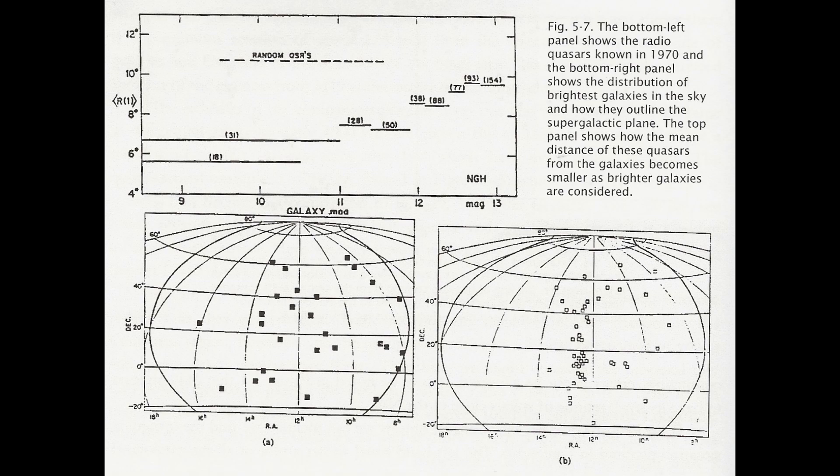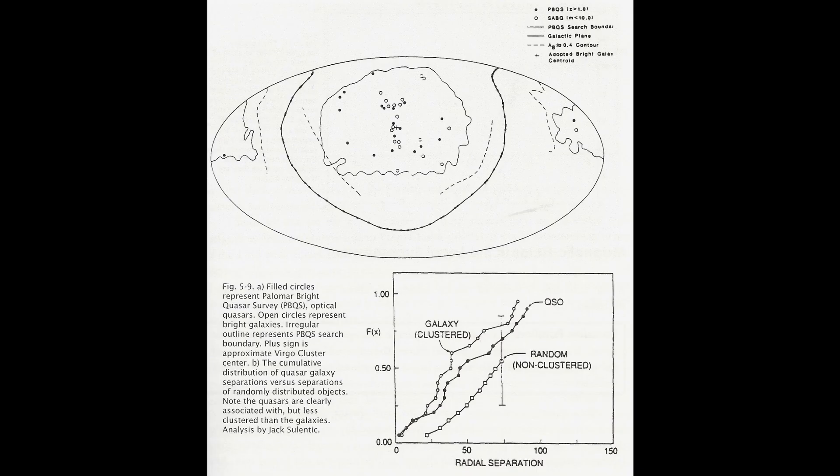When the Palomar Bright Quasar Survey surveyed the northern sky and you examined the locations of the quasars, then you would originally expect the quasars to be distributed randomly across the entire sky. That is not what you find. Instead they are all concentrated within the Virgo cluster.